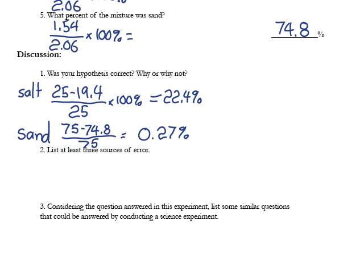Well, let's continue with the discussion. We always want to know whether our hypothesis was correct, why or why not, list some sources of error, and then consider some other questions that might be answered that are similar to the experiment we just did. So to figure out if the hypothesis was correct or not, we can calculate percent error. And that's just the actual, for the salt, actual of 25 minus the observed value of 19.4% divided by 25 and times 100. That gives 22.4% error.